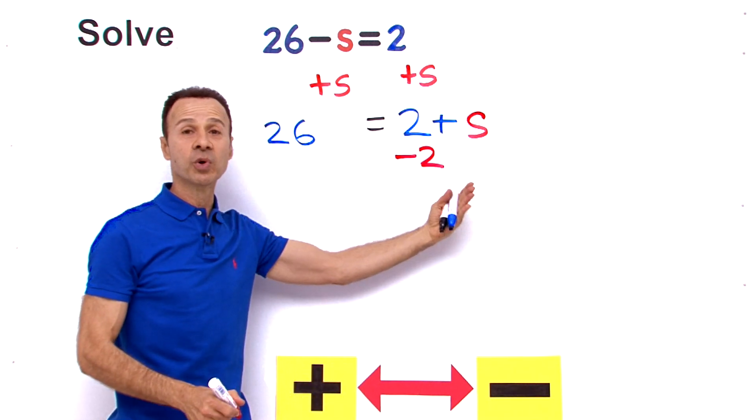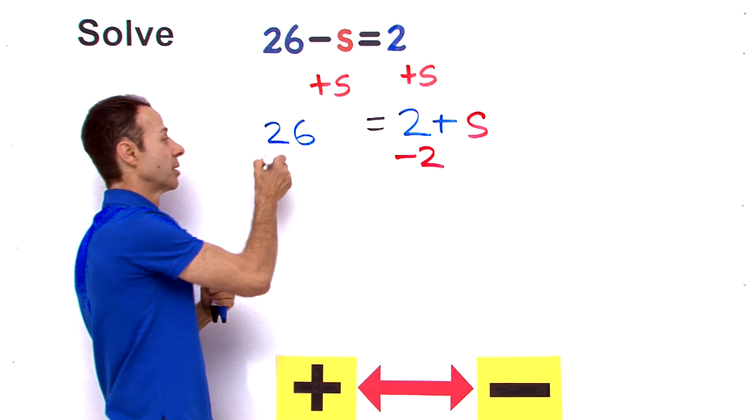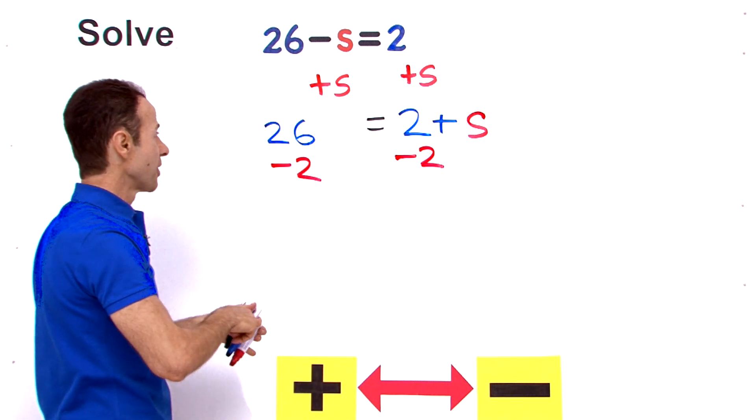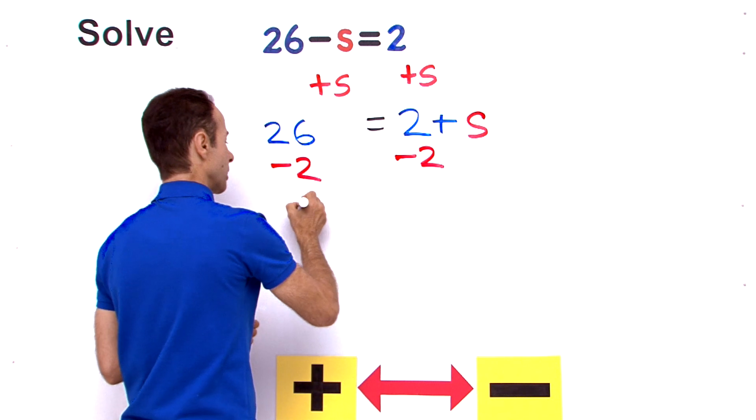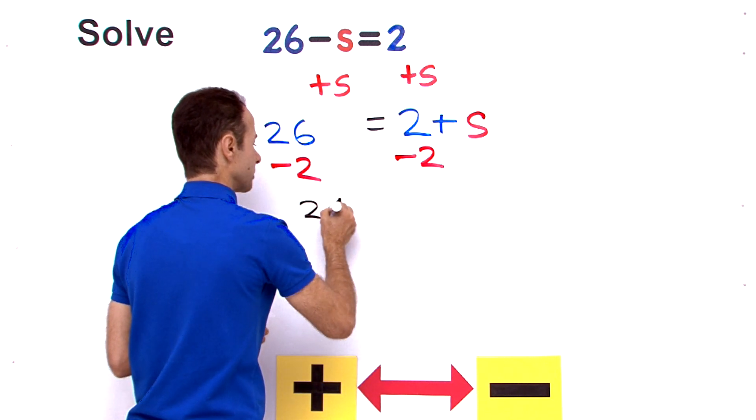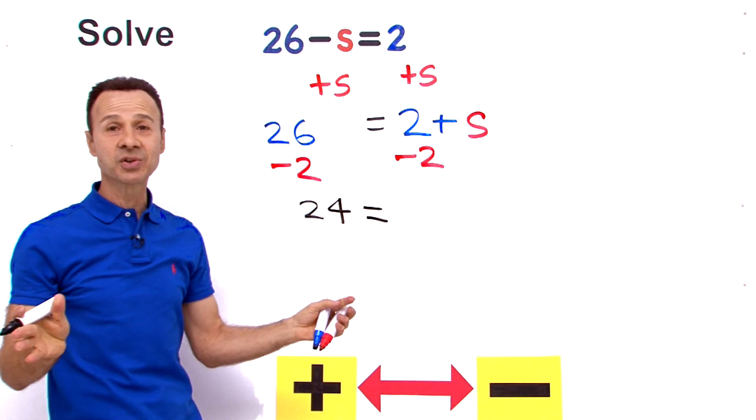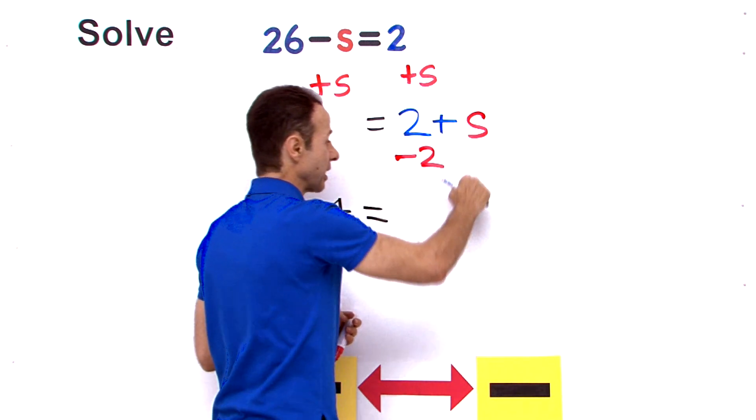And if we do it on this side we also do it on this side. Minus 2 from here too. So 26 minus 2 that gives us a value of 24. Bring down the equals. 2 minus 2 that cancels, that's 0 and just bring down the s.